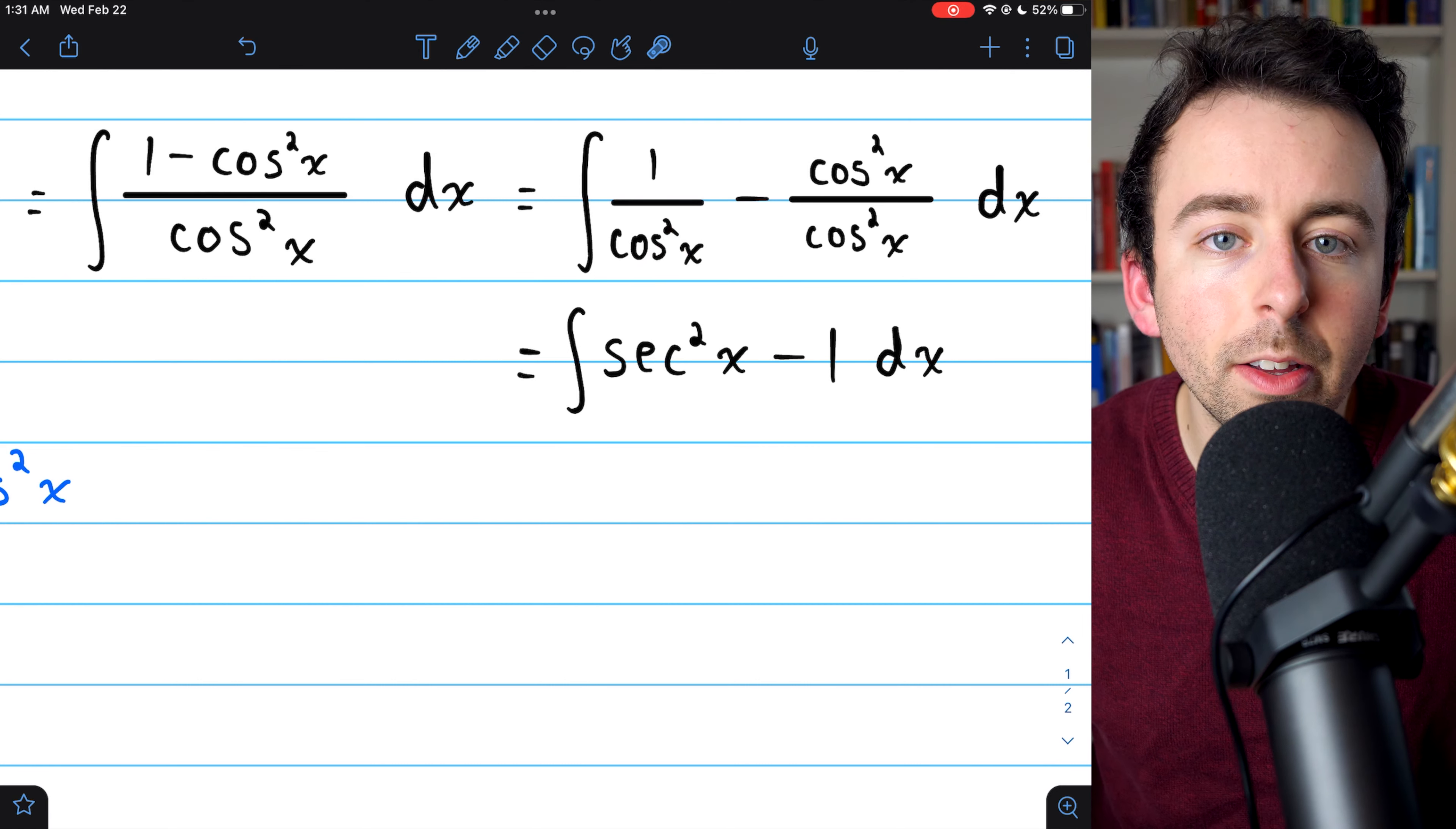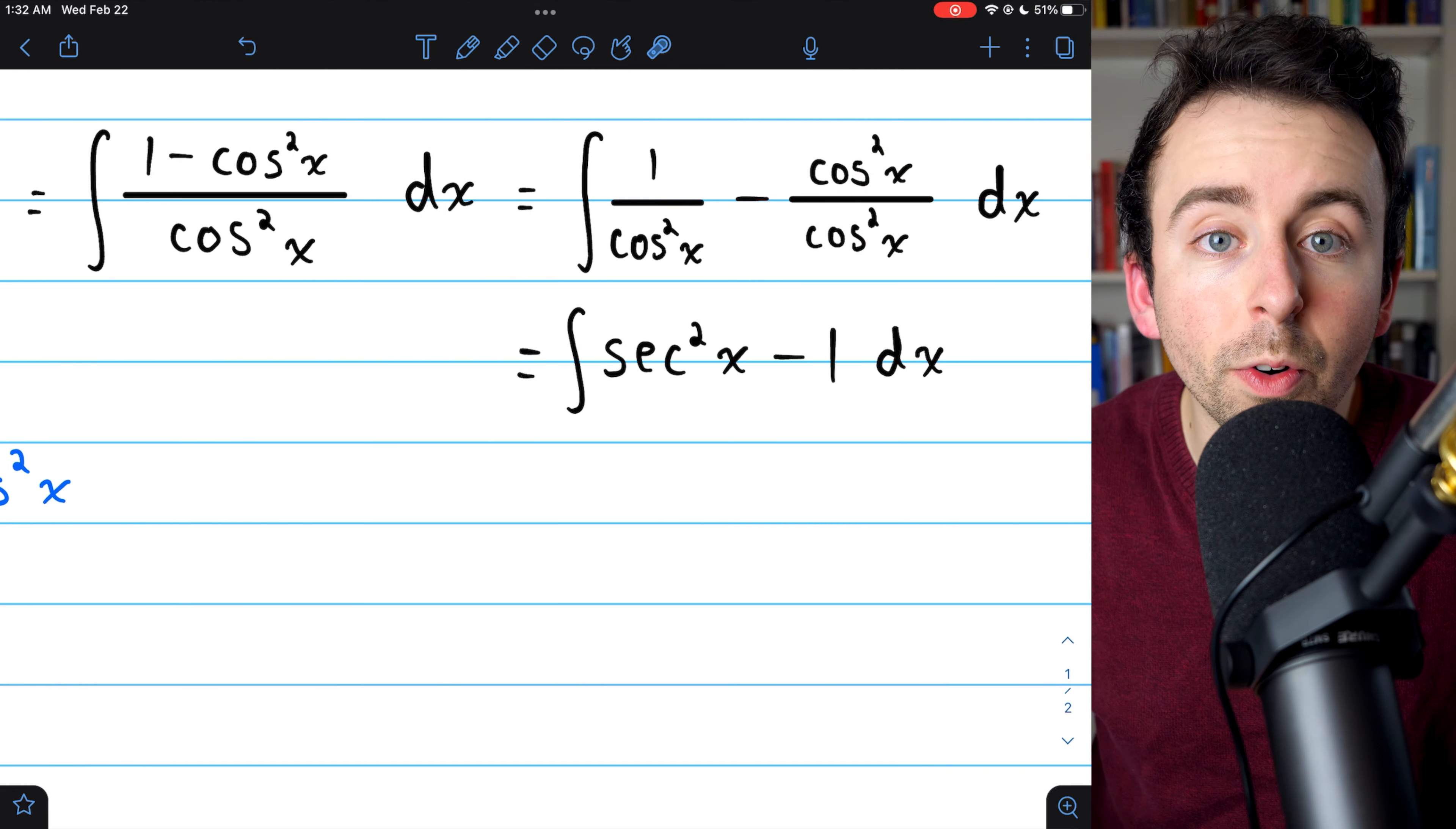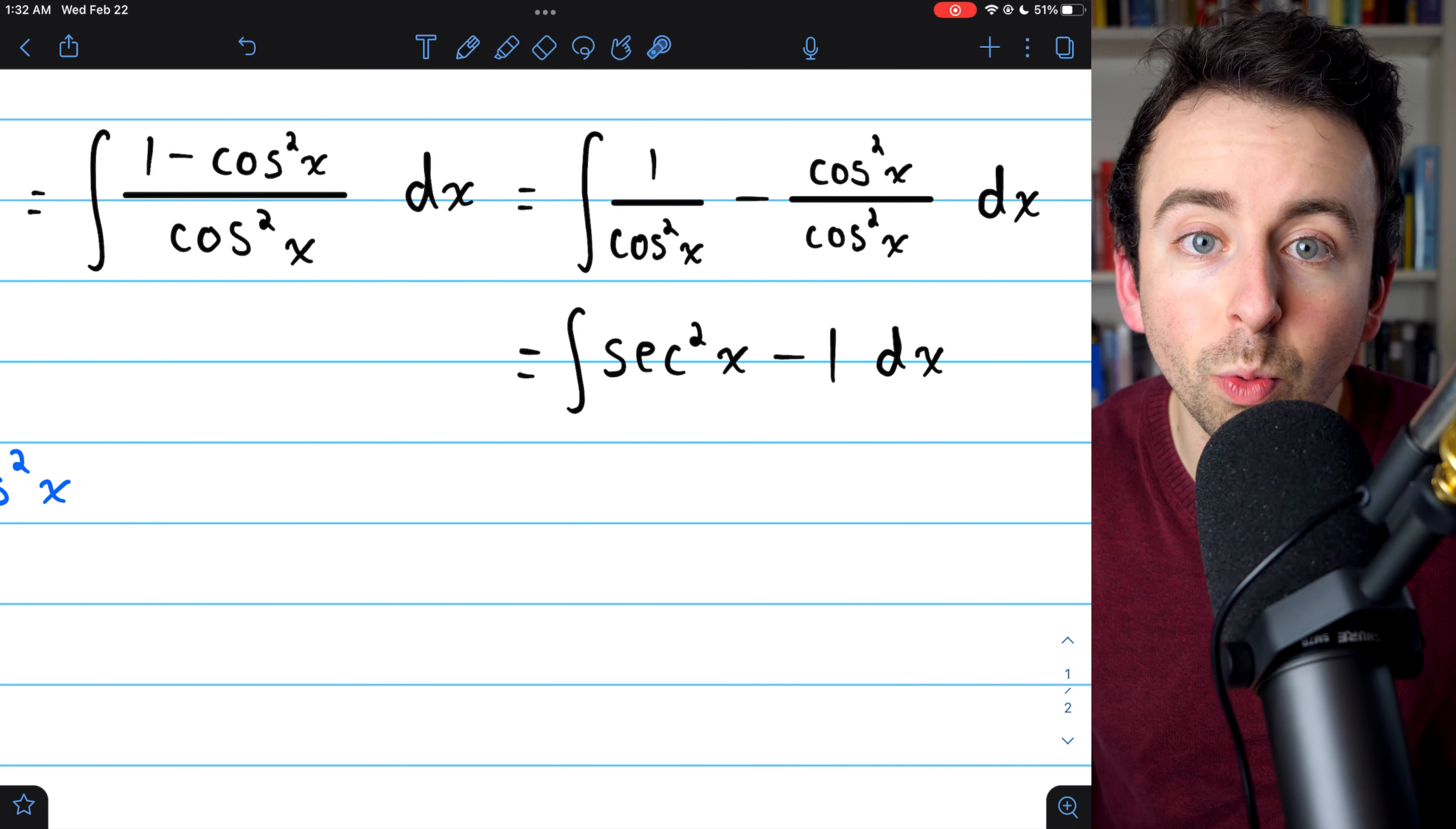One over cosine squared, by definition, is secant squared. And cosine squared over cosine squared, of course, is one. So now this is just the integral of secant squared minus one.